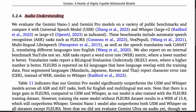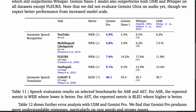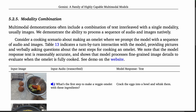For audio understanding, the high-level takeaway is that Gemini Pro is pretty strong relative to Whisper and the Universal Speech Model, across automatic speech recognition benchmarks like Multilingual LibriSpeech, and automatic speech translation like CoVoST 2. From a practical perspective, Nano 1 is also pretty strong here, which will presumably be useful for on-device ASR.